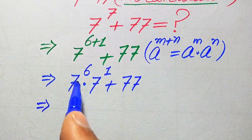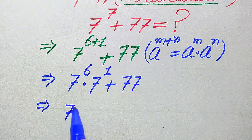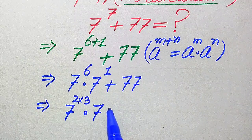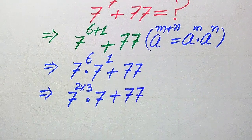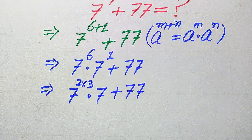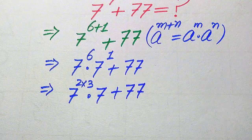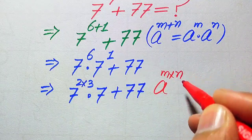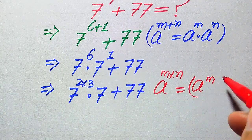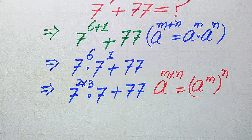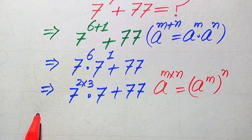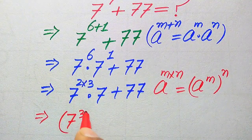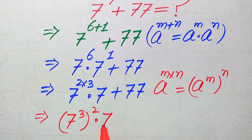In the next step we again break the exponent 6. We write 6 as 2 multiplied by 3, giving 7 to the power of 2×3, multiplied by 7, plus 77. We use another exponential law: a to the power of m multiplied by n equals a to the power of m, to the power of n. According to this rule we move the 3 inside, and it becomes 7 cubed whole square, multiplied by 7, plus 77.